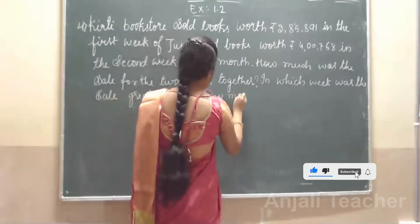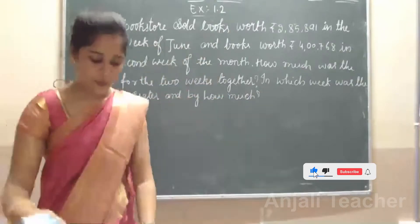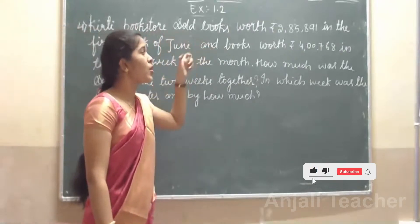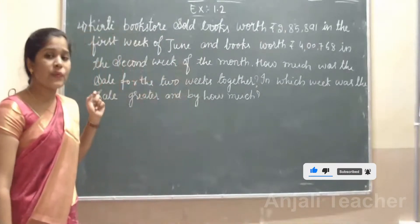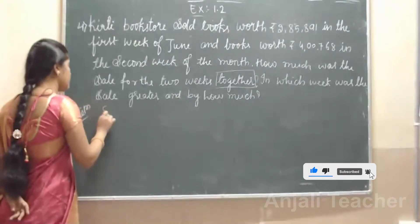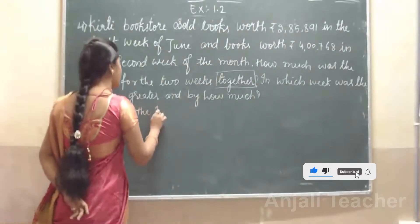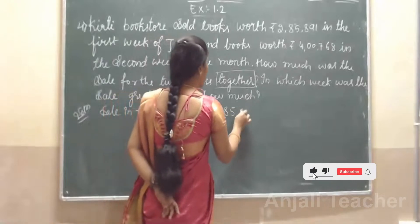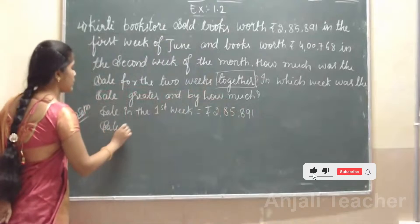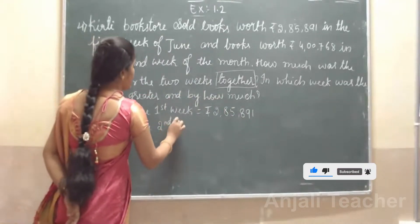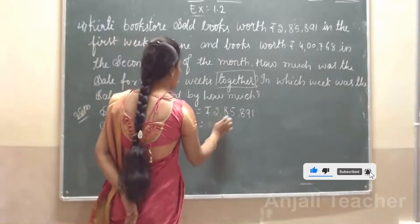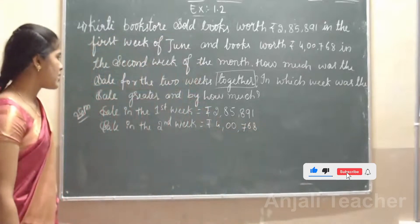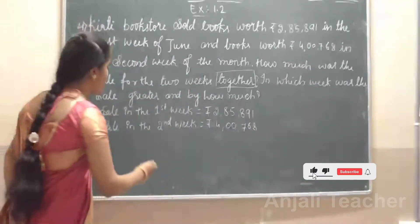Many questions in this one question. See here — KT Bookstore sold books worth Rs. 2,85,891 in the first week, and Rs. 4,00,768 in the second week. What we are asking: save for the two weeks together. Together means addition.